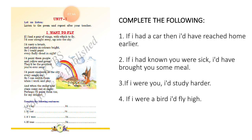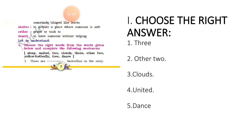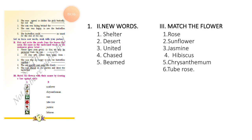They have given four dashes — in those dashes we can write these answers. Next, turn to page number three, 'The Three Butterflies.' In the last part they have given 'Choose the Right Words.' On the top it says: choose the right words from the words given below and complete the following sentences. The options are: sleep, united, clouds, other two, yellow, butterfly, tree, dance. The first question is: there are dash butterflies in the story. The heading itself says 'three butterflies,' so the answer is three.